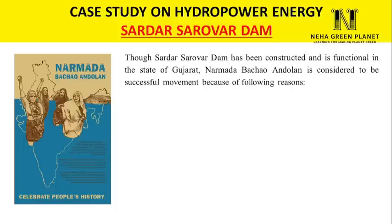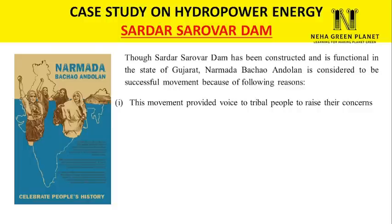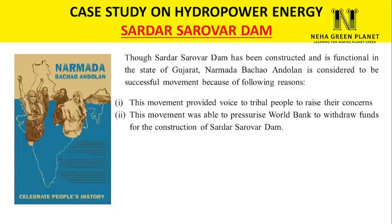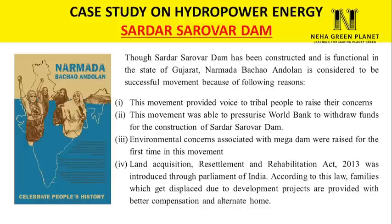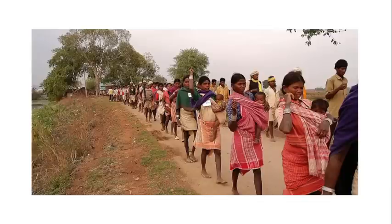World Bank constituted the independent Morse Committee in 1989 to verify claims made by the Narmada Bachao Andolan. The Morse Committee confirmed that the mega dam would harm the environment and constitute a gross violation of tribal rights. Consequently, World Bank refused further financial support for the Sardar Sarovar Dam. However, the dam was ultimately constructed using state and industrial funds and is now functional in Gujarat. The Narmada Bachao Andolan is regarded as one of India's most successful movements: it gave tribal people a voice, pressured World Bank to withdraw funds, and raised environmental concerns about mega dams for the first time. It also led to the Land Acquisition Resettlement Rehabilitation Act 2013, which provides better compensation and alternate homes to displaced families.